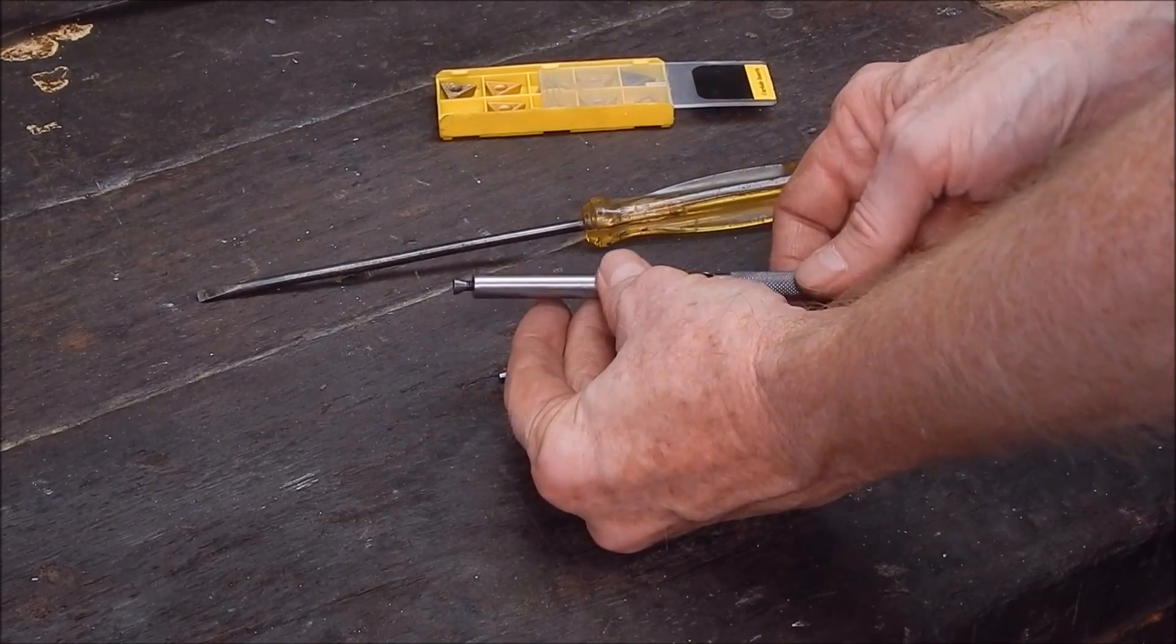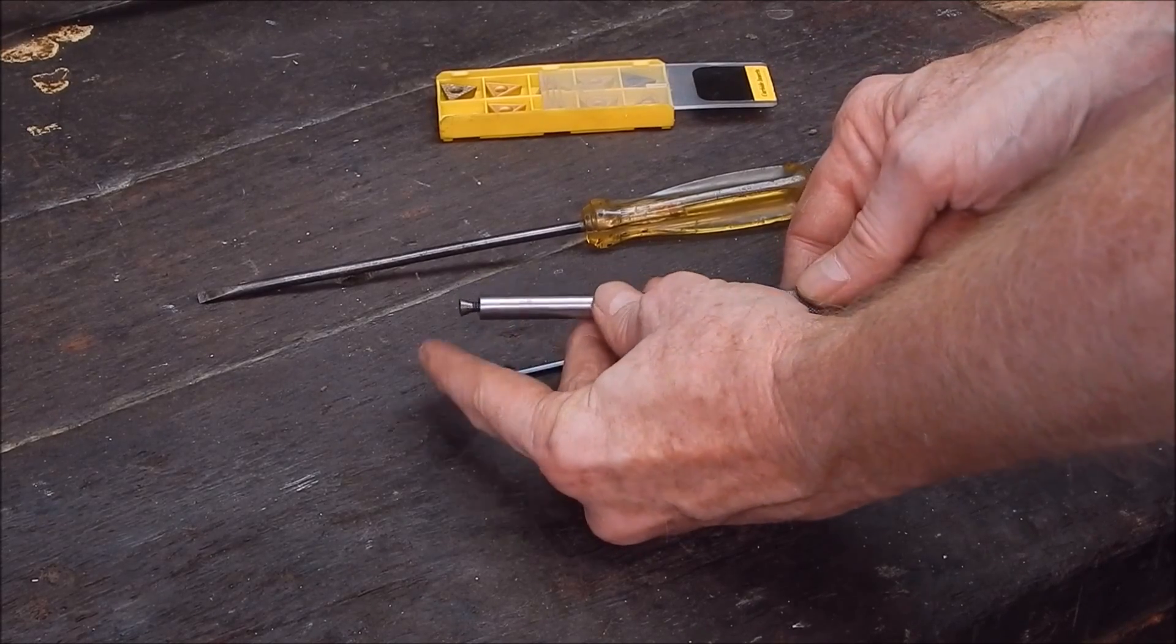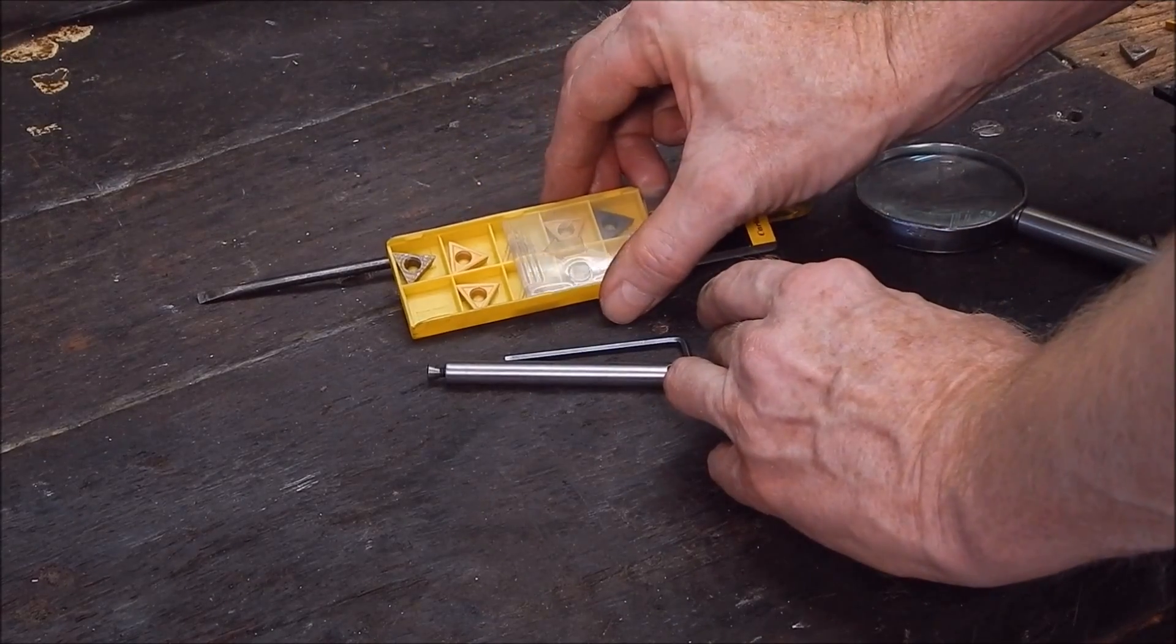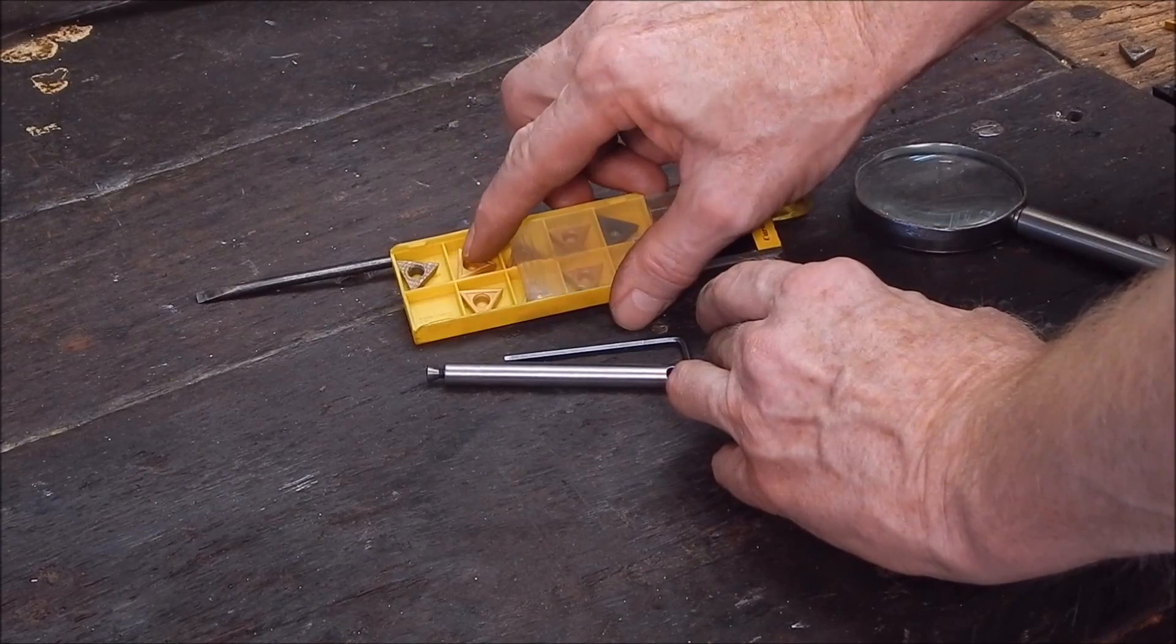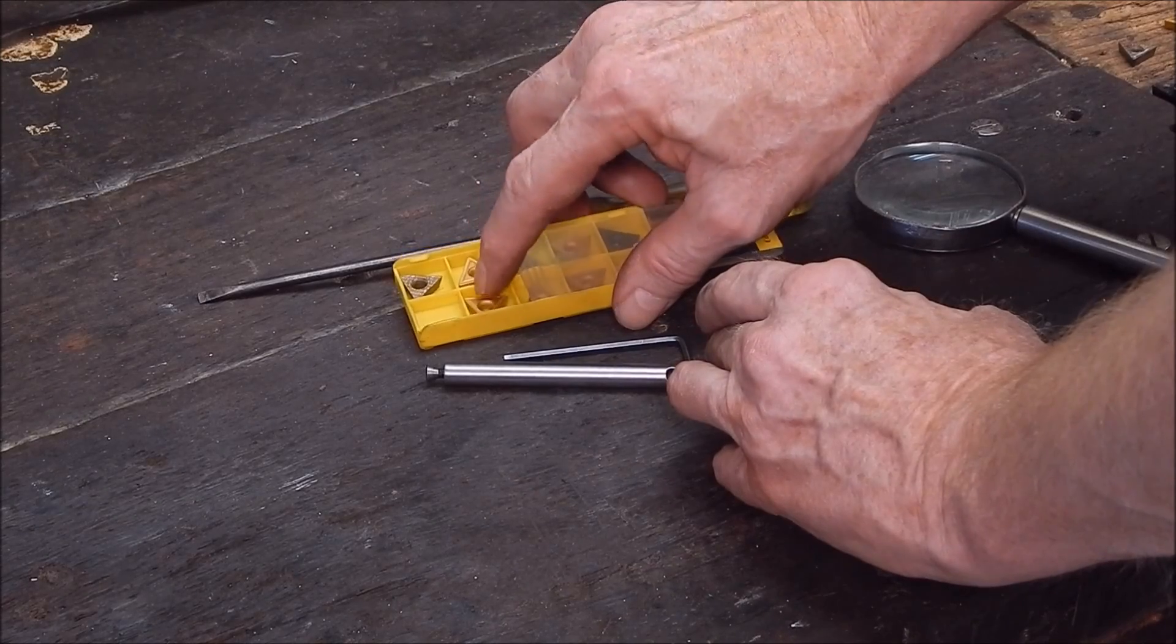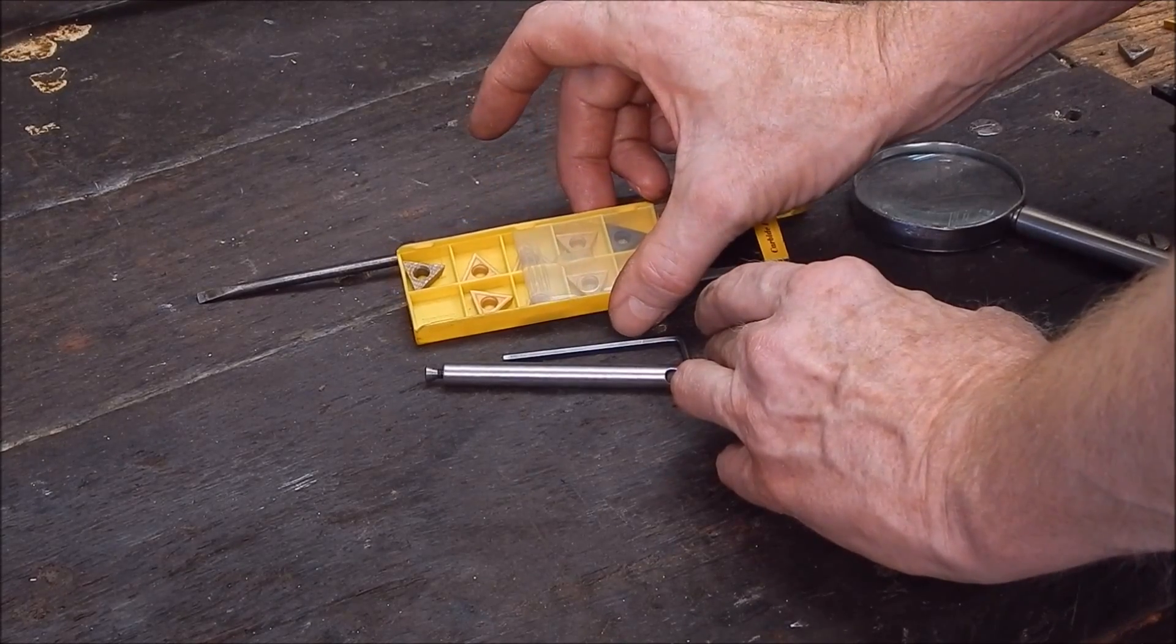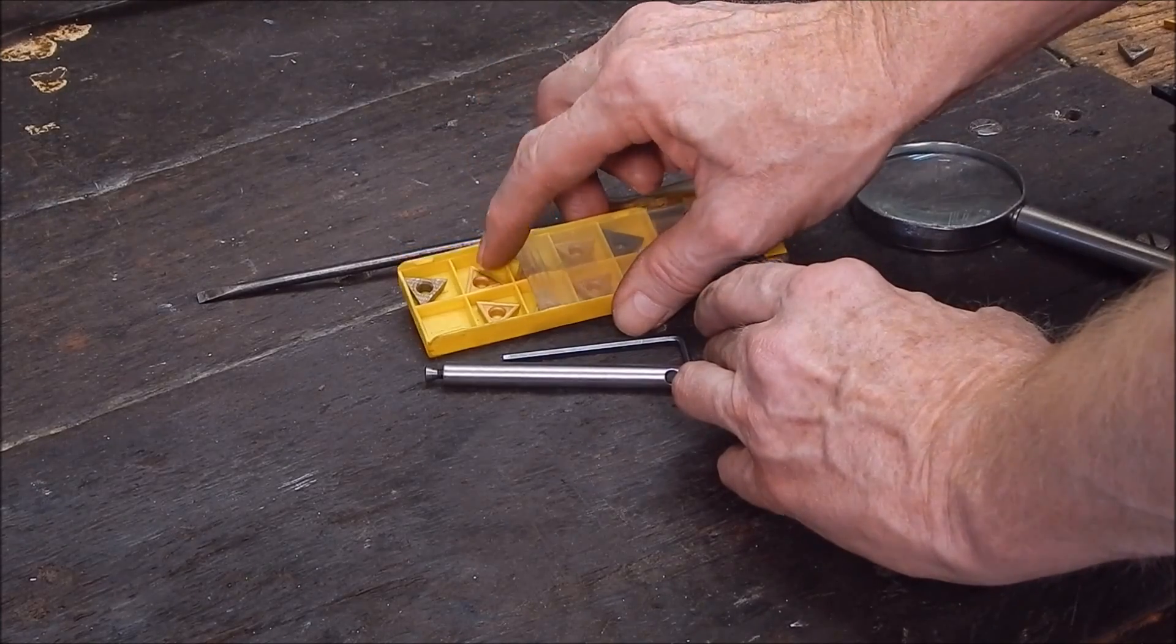I mean, reground inserts are never going to be as good as the original, I don't think. I've reground them for years and you get a pretty good finish out of them, but I don't think they're ever up to the standard of fresh ones. These are obviously made properly to do the job, and to try and replicate that tip, the angles, the rollover, the circumference, it's pretty difficult when you're doing it freehand and you're working in such small measurements.